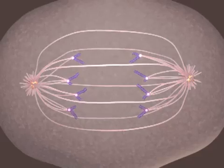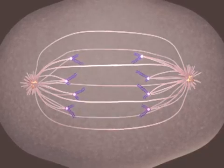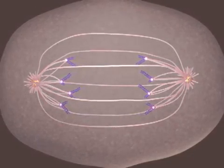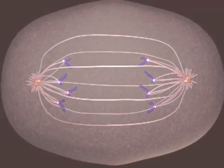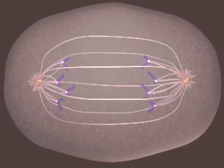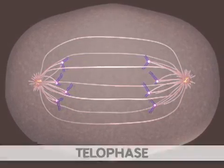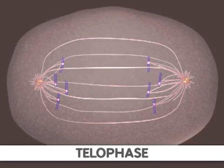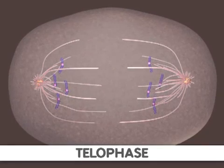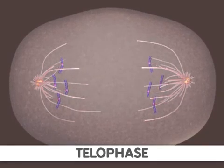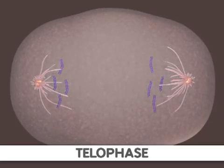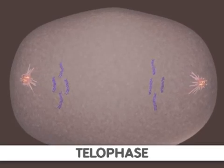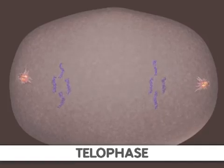Telophase is the final stage of mitosis. It is here the components of the new cells begin to appear. At this point, the spindle fibers are broken up. A new nuclear membrane surrounds the chromosomes at the end of each cell.